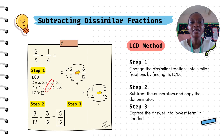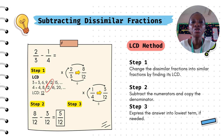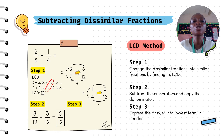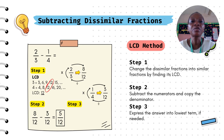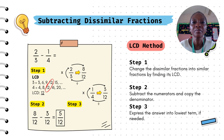Let's move on to subtracting similar or unlike fractions using the LCD method, which is the LCM method. Step 1: change the dissimilar fractions into similar fractions by finding the LCD. Step 2: subtract the numerators and copy the denominator. Step 3: express the answer in the lowest term if needed.